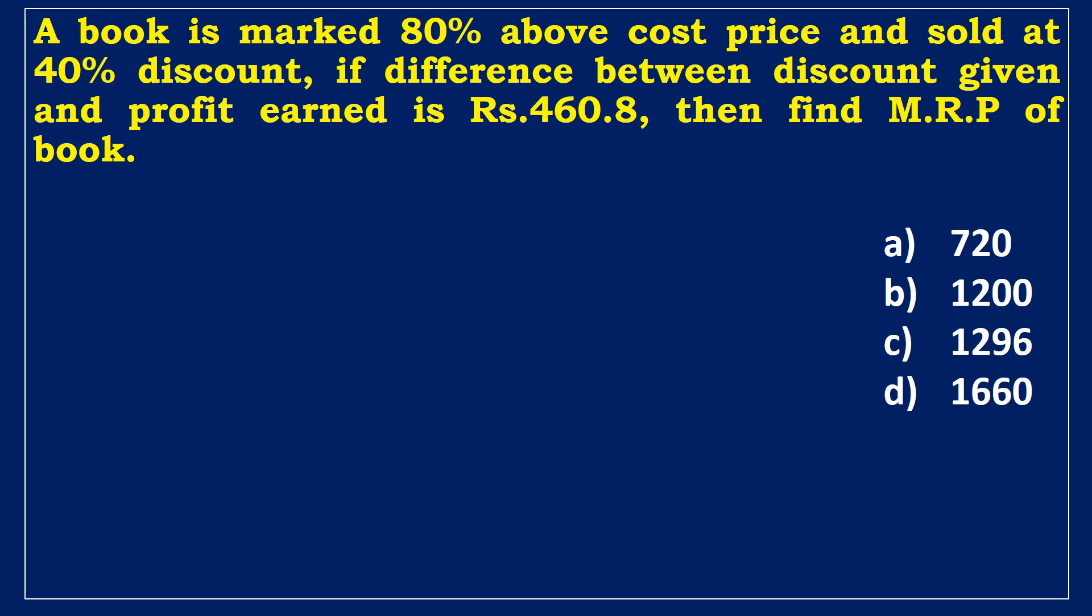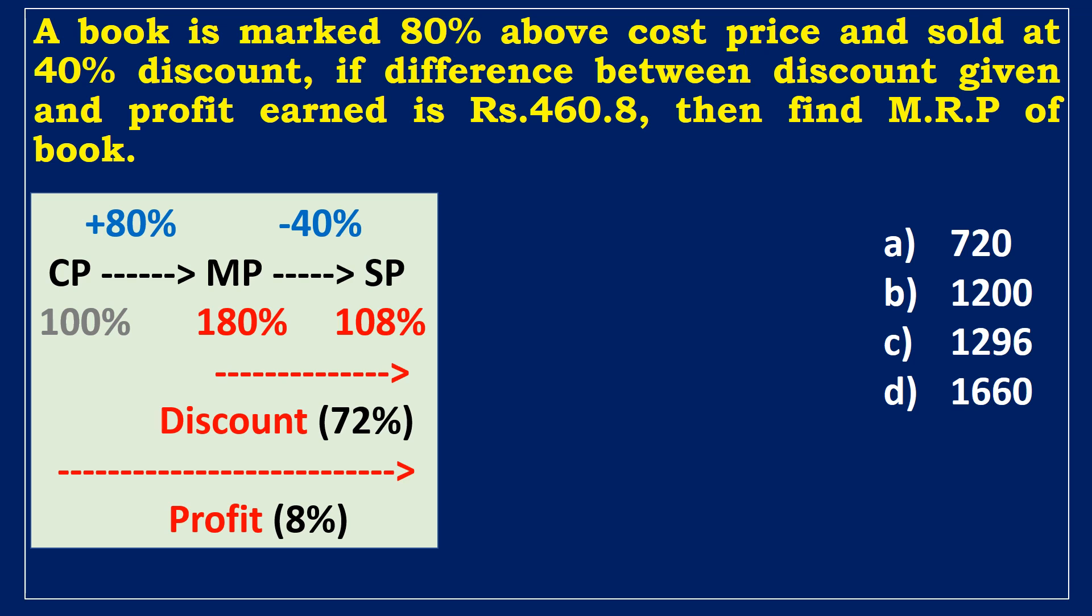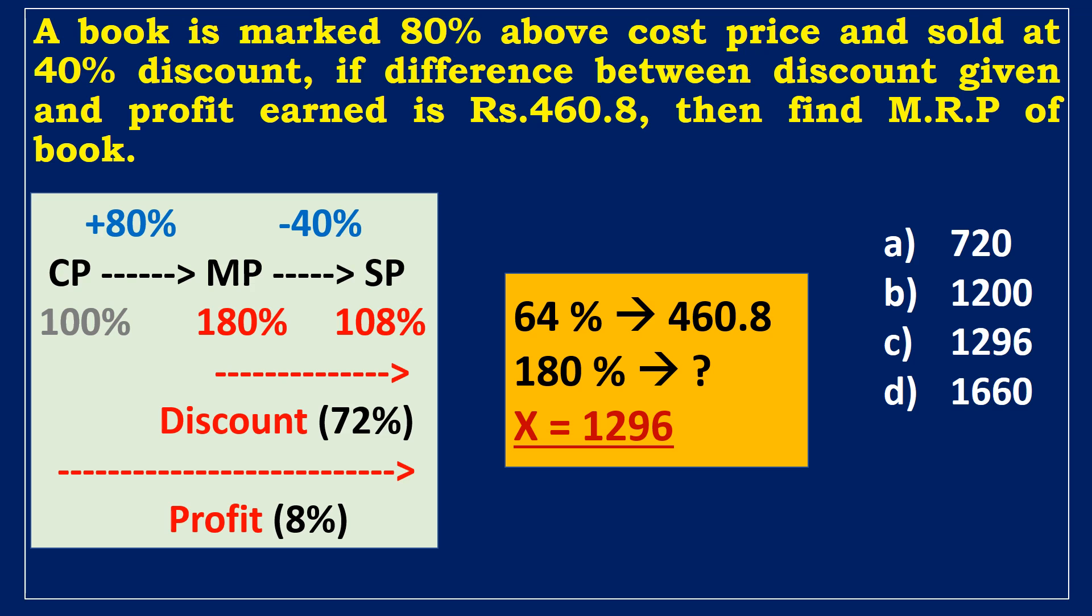Here is another example of the profit and loss concept. A book is marked 80% above the cost price and sold at a 40% discount. If the difference between the discount given and the profit earned is rupees 460.8, then find the MRP of book. Let's assume the cost price of the book is 100%. A book is marked at 80% above the cost price, which means the marked price will be 180%. The book was sold at a 40% discount, which implies 40% of the 180 is 72%. Then, subtracting 72 from 180 gives 108%, which is the percentage of the selling price of the book. Profit is defined as the difference between the selling price and the cost price, which is 108% minus 100% equals 8%. According to the question, the difference between the discount given and the profit earned is 72 minus 8%, or 460.8. Then we must determine the MRP of the book, which is 180%. Solving these two equations provides 1296 rupees, which is the MRP of the book.